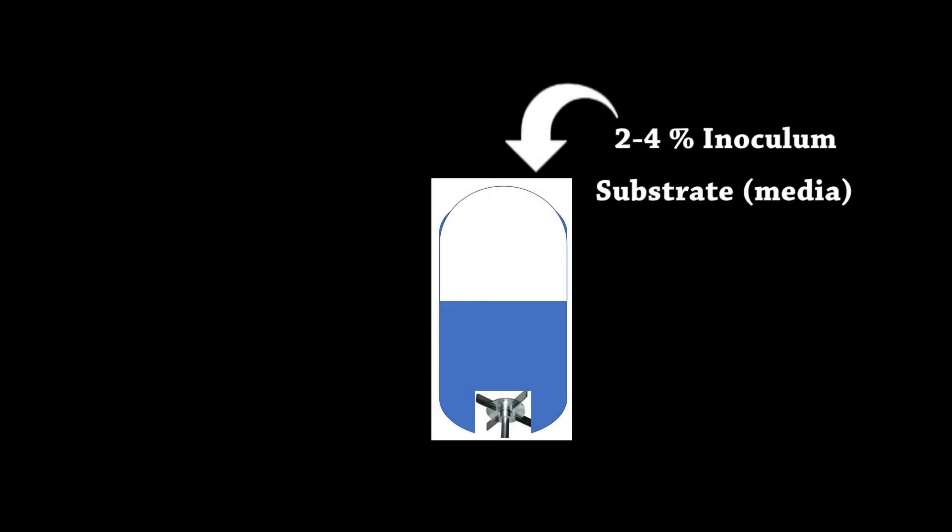These fermenters are sterilized using steam at 20 psi, then cooled using water jackets. Air trapped in the fermenter is removed by pumping inert or carbon dioxide gas to maintain anaerobic conditions. 2 to 4% of inoculum is added first, followed by the addition of media for proper mixing.